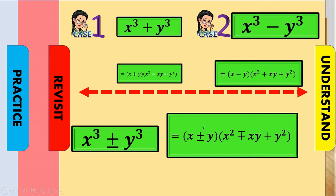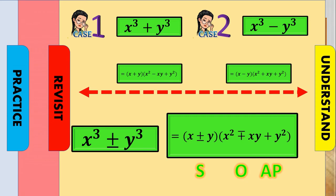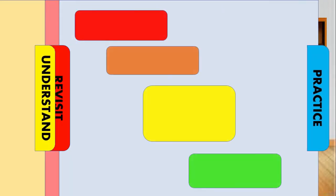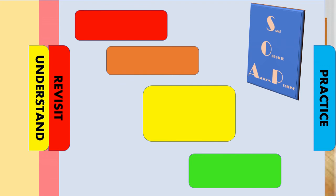Notice the patterns: the terms are the same, and the pattern for the operations is Same, Opposite, Always Positive — SOAP. Remember: Same, Opposite, Always Positive. That is our key pattern.